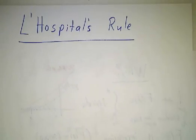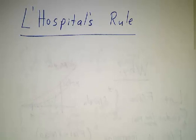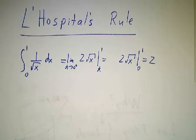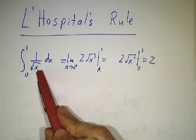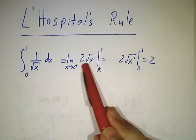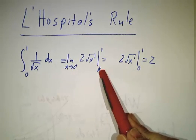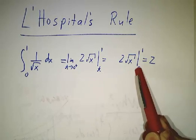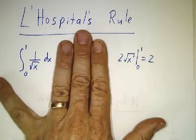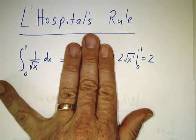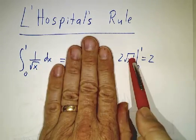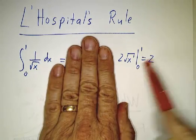One final thing about improper integrals: don't forget to use L'Hôpital's rule. There are times when you can evaluate an improper integral by simply plugging in at the endpoints. For example, the integral of 1/√x dx gives 2√x evaluated at 0 and at t, and the limit as t approaches 0 is found just by plugging in 0. So we could just write: the antiderivative is 2√x, plug in 1 and 0, and you're done.